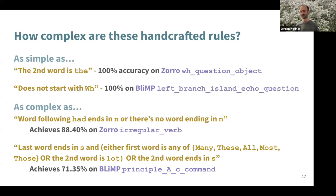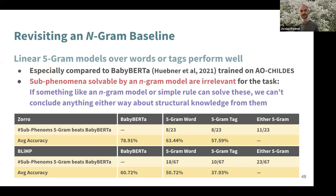We also trained two n-gram models — one over words and one over part-of-speech tags — keeping these very simple. One or the other n-gram model does relatively well on many phenomena: 63% and 58% on Zorro and 50% and 38% on BLIMP. If an n-gram model can solve a phenomenon, then that phenomenon isn't really relevant for testing structural understanding. It would be much more interesting to remove phenomena the n-gram model handles well and evaluate only the remainder.